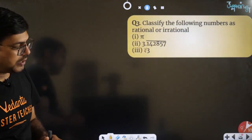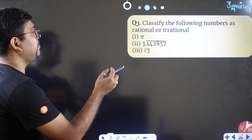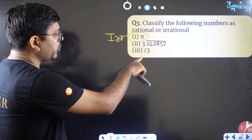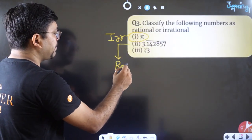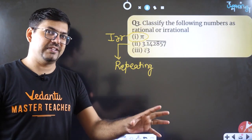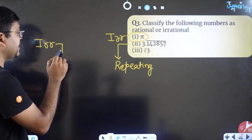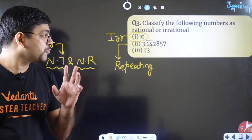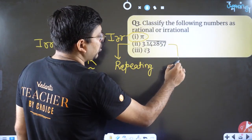Next question: classify numbers as rational or irrational. First: π — by theory, π is an irrational number. Second: 3.1̄4̄2̄8̄5̄7̄ — the bar means repeating decimal. For an irrational number, the decimal must be non-terminating AND non-repeating. Since this decimal is repeating, it cannot be irrational, so it is a rational number.